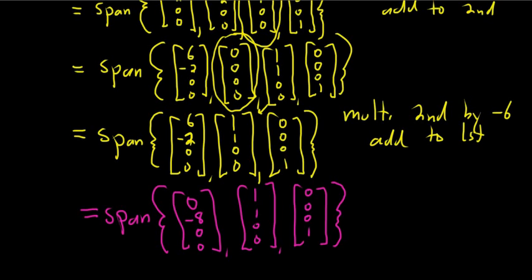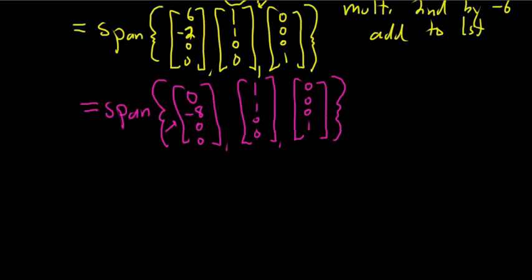We've rewritten our span. Now maybe we can make this one a 1. We can do that by multiplying it by -1/8. So this is equal to the span. This is going to be [0, 1, 0, 0].